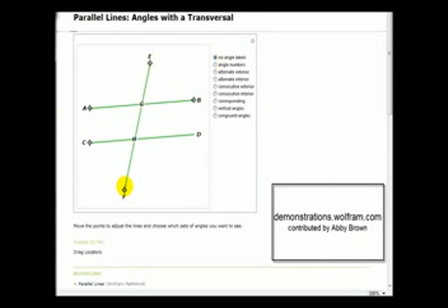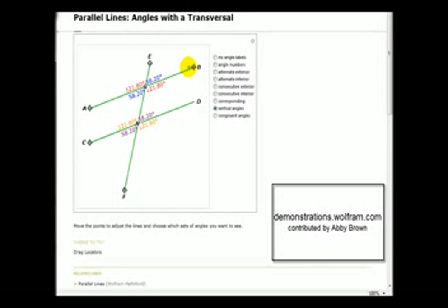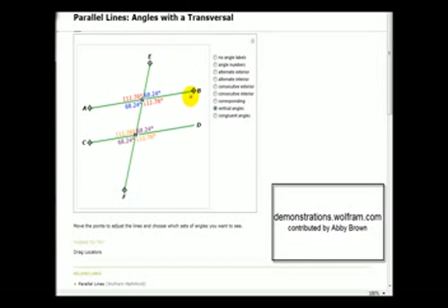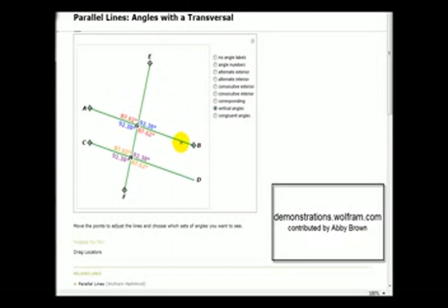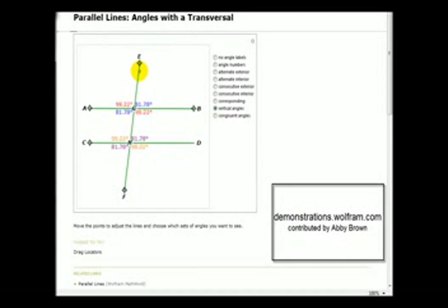Let's take a look at a Wolfram demonstration to illustrate this as well as many other angle relationships. Here we have two parallel lines cut by what's called a transversal. We can see in red those are vertical angles, and so are the ones in blue, as well as the ones in orange and purple. If we move the parallel lines, notice how the vertical angles remain equal in measure, and the same thing if we move the transversal.